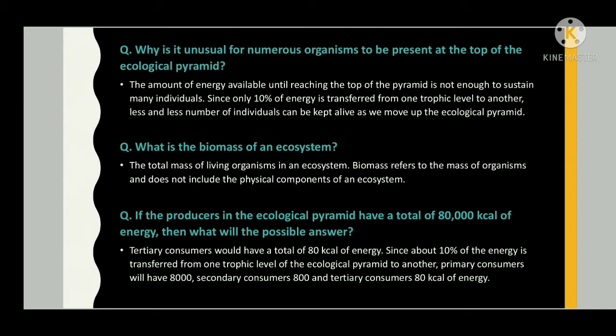Why is it unusual for numerous organisms to be present at the top of the ecological pyramid? The amount of energy available until reaching the top of the pyramid is not enough to sustain many individuals, since only 10 percent of energy is transferred from one trophic level to another. Less and less number of individuals can be kept alive as we move up the ecological pyramid.